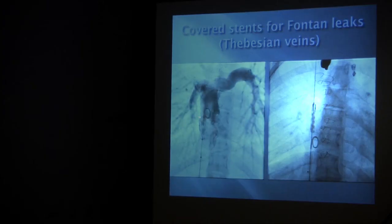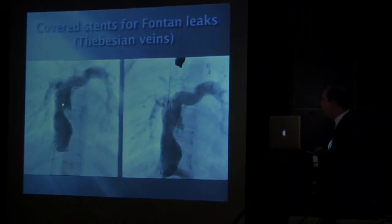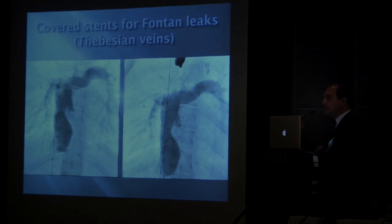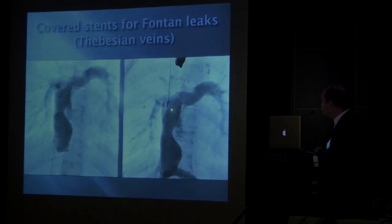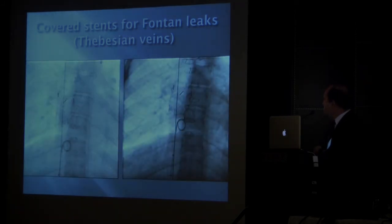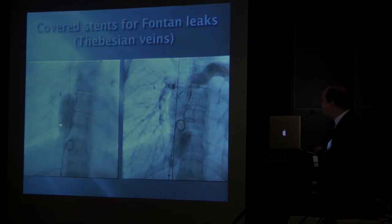This is a patient who had a Fontan with low saturations, found to have a whole network of little venous connections from the Fontan to the atrium. This is the Gore aortic extender — a self-expanding stent covered with PTFE — being positioned at the site of those venous connections, with a slight narrowing we also hoped to relieve. After the stent is released by pulling a rip cord, it achieves full expansion, is post-dilated, and the picture afterwards shows the result.